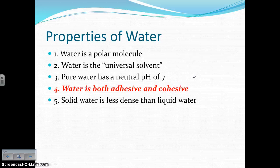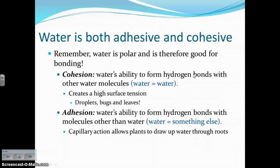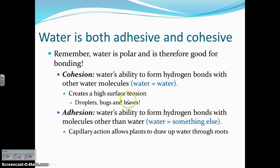Property number four: water is both adhesive and cohesive. Because water is polar, it's really good for bonding — both to itself and to other molecules. Cohesion describes water's ability to form hydrogen bonds with other water molecules. This creates surface tension, which is like an invisible membrane around a droplet of water, allowing droplets to form on leaves and allowing insects to walk on the surface of water.